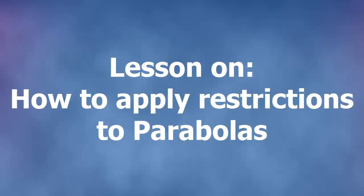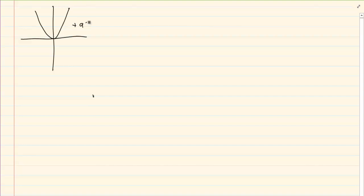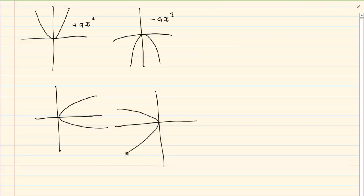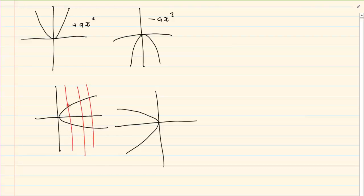Hi and welcome to my maths class. Today we are going to discuss how we restrict parabolas so that their inverses become a function. A parabola can be a positive x squared or a negative ax squared. When we did the inverse we ended up with a relationship that looks like this, and for the negative one we ended up with a relation that looked like this. What we realized is that even though the parabolas were functions, their inverses were not functions.